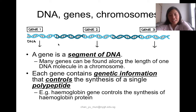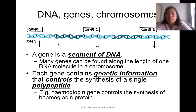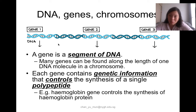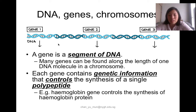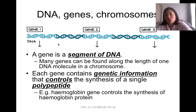Besides being a physical segment of DNA, a gene also has a functional characteristic: the segment of DNA within a gene contains genetic information that controls the synthesis of a single polypeptide or protein. For example, haemoglobin is the red pigment inside red blood cells and is actually a protein molecule. Within human chromosomes there is a segment of DNA assigned as the haemoglobin gene, and the genetic information within this segment directs the cell to synthesise haemoglobin. For every protein found inside a cell there should be an appropriate gene that controls its synthesis.